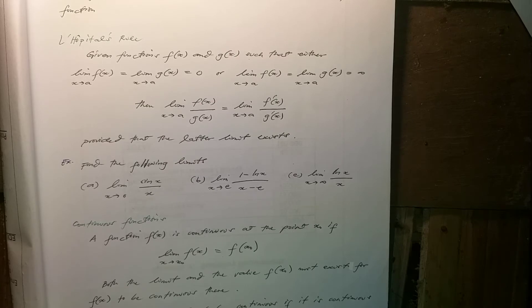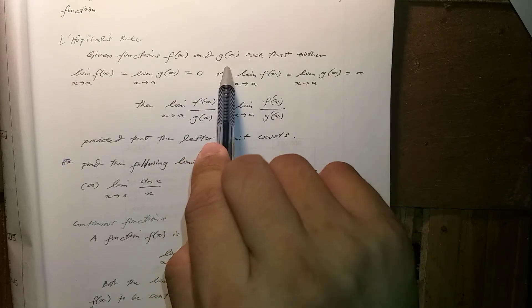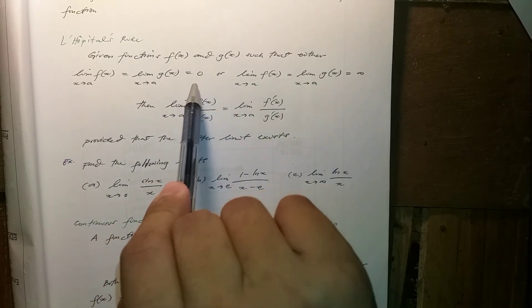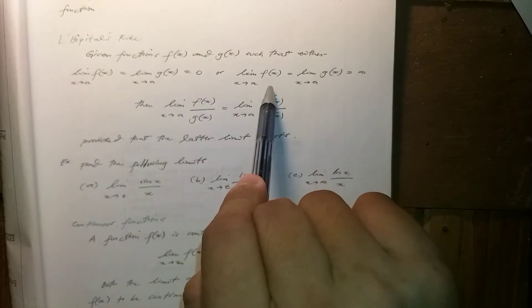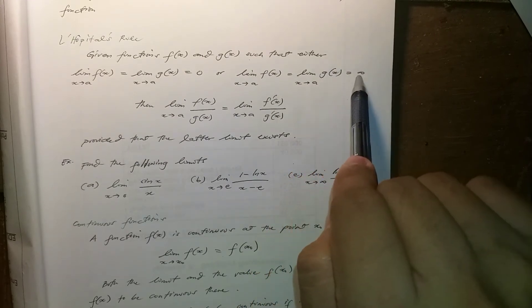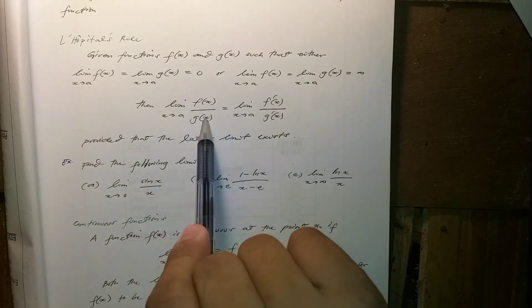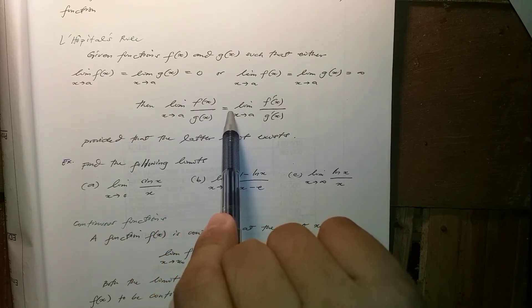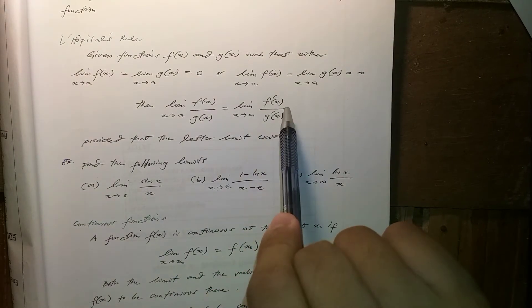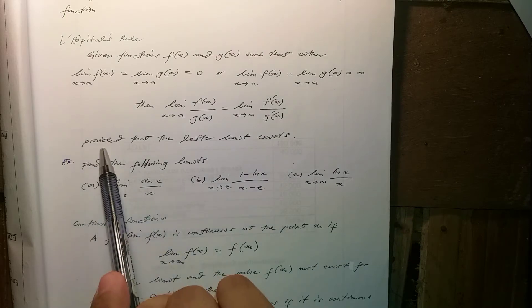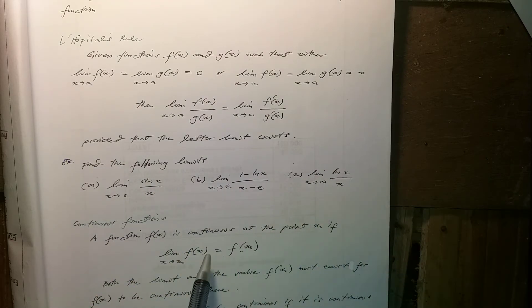Now let's proceed to L'Hôpital's Rule. Given functions f(x) and g(x) such that either the limit of f(x) and the limit of g(x) are both 0, or both infinity, then the limit of their quotient f(x)/g(x) is also equal to the limit of the quotient of their derivatives f'(x)/g'(x), provided that the latter limit exists.